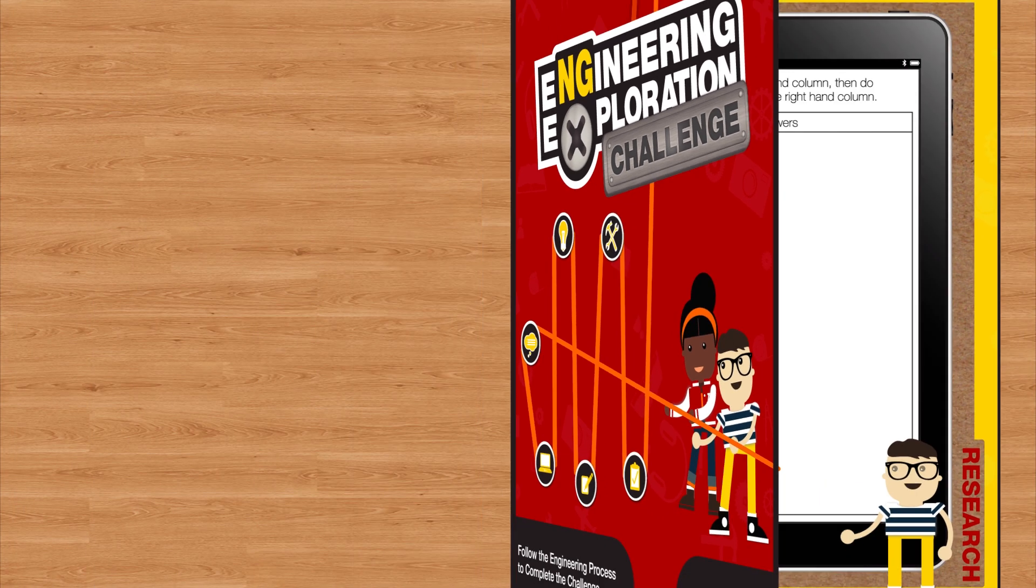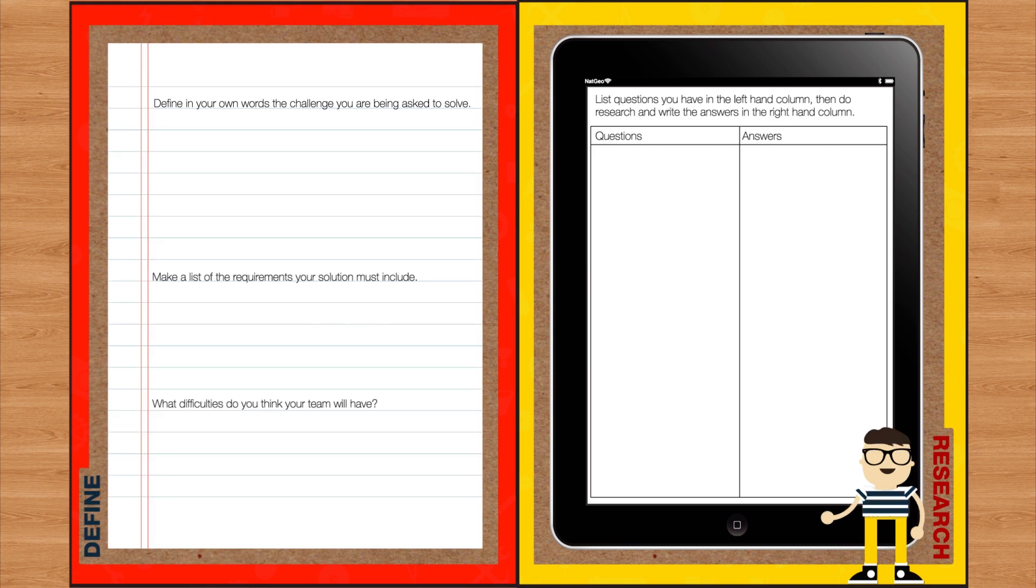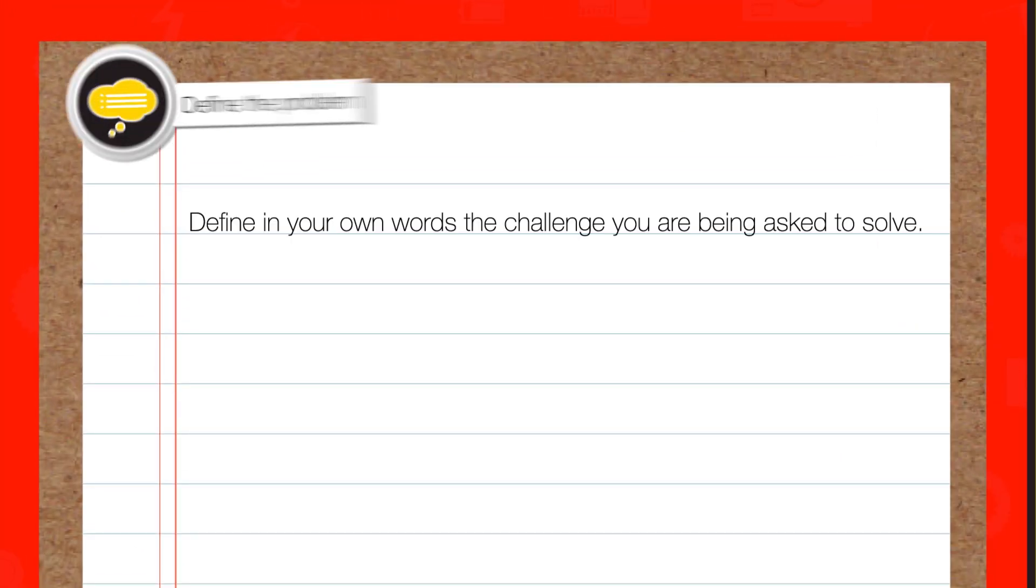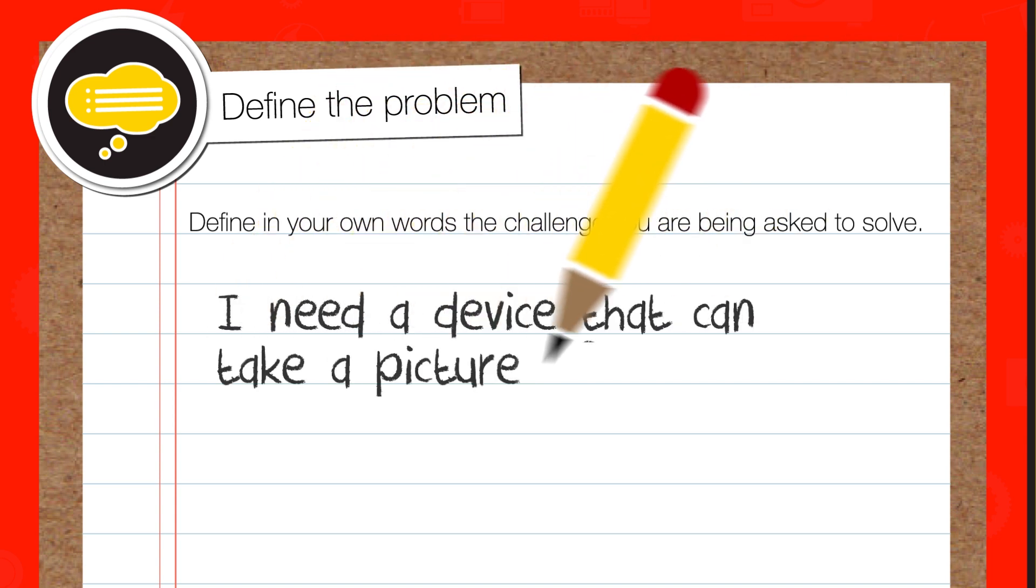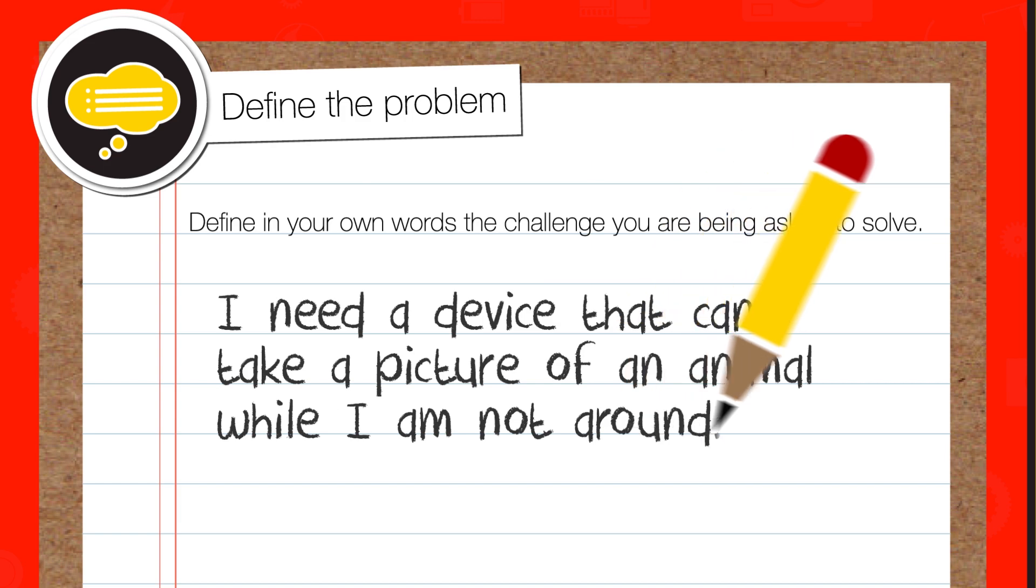To get started, you need to know the engineering process. So, step one, define your problem by defining what success will look like. For example, I want to take a picture of a lion acting naturally in the wild.